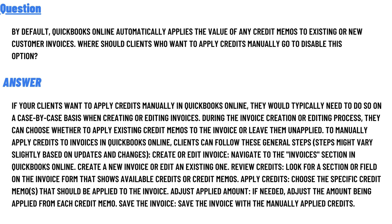To manually apply credits to invoices in QuickBooks Online, clients can follow these general steps: navigate to the invoice section in QuickBooks Online and create a new invoice or edit an existing one. Look for a section or field on the invoice showing available credit or credit memos. Choose the specific credit memo to be applied to the invoice, adjust the applied amount if needed, then save the invoice with the manually applied credit.